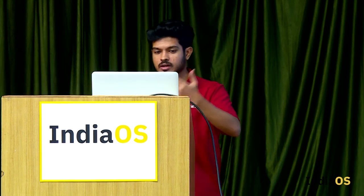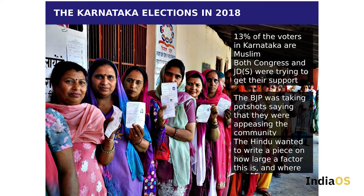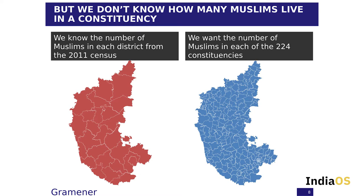Very often we need to transfer data between these geographical areas. For example, you might have data at a state level and want to see it at a district level, or data at an assembly constituency level that you want at a polling booth level. In 2018, during the Karnataka election, 13% of voters were Muslim. Both Congress and JDS were trying to get their support, and BJP accused them of minority appeasement. A newspaper wanted to understand how large a factor this was. The problem: population data from the census exists at district or village level, but elections happen at constituency level, and there's no direct mapping between districts and constituencies even though the areas overlap.